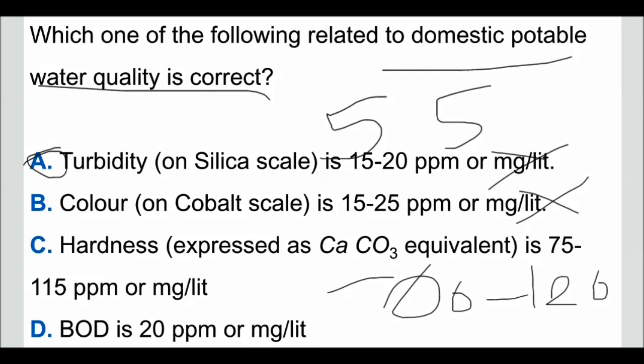We will wait after seeing option D to confirm. Option D: BOD is 20 ppm or milligram per liter. For normal domestic portable water quality, the BOD should be nil, so option D is also wrong. The correct answer is option C. To summarize: turbidity is 5 ppm, color is 5 ppm, hardness is 75 to 115 ppm, and BOD is 0.